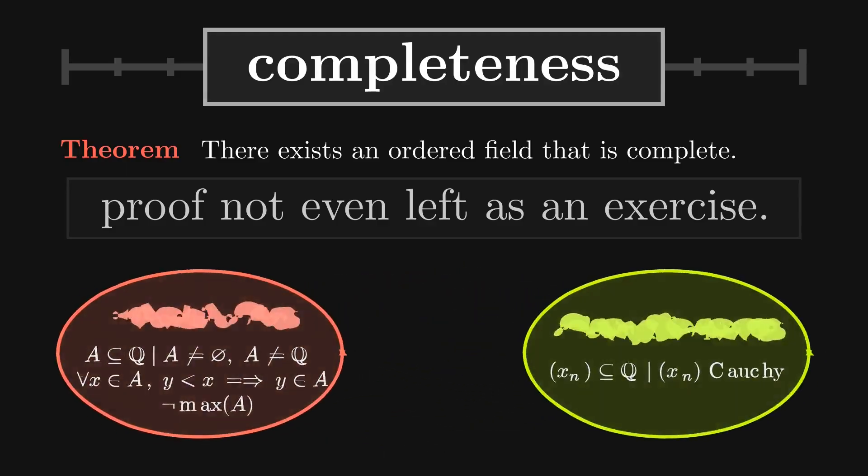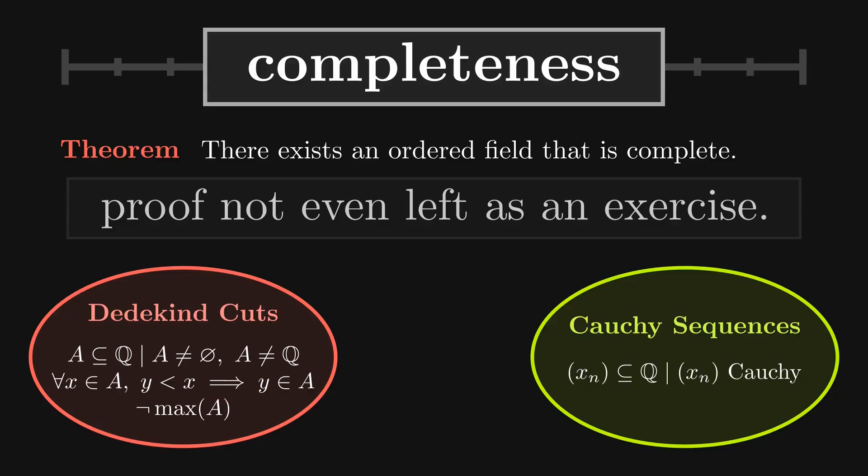Though they come from different perspectives. Dedekind cuts emphasize order and partitioning of sets, while Cauchy sequences take the perspective of convergence with respect to a metric. Each can be shown to imply the other, so neither is weaker. You can think of it as two roads to the same destination.